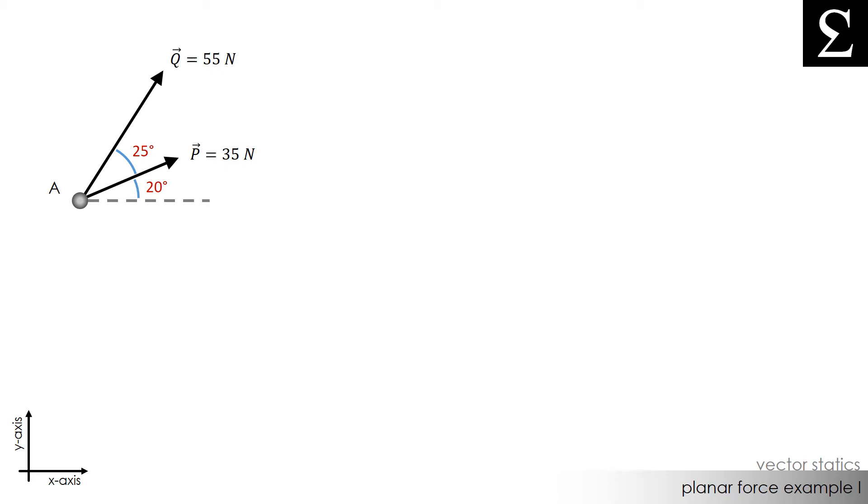Here I have a particle A that has two forces, P and Q, acting upon it. The force of vector P is 35 newtons, and the force of vector Q is 55 newtons. The angle that vector P makes above the horizontal is 20 degrees, and the angle vector Q makes above the vector P is 25 degrees.